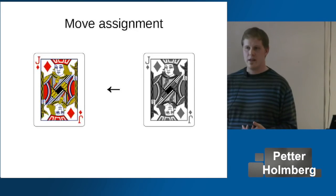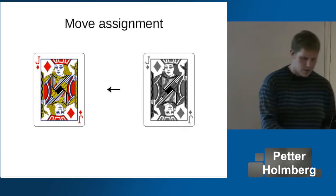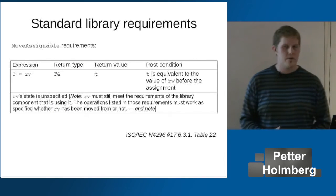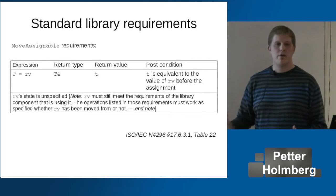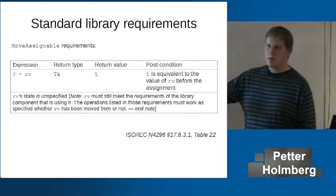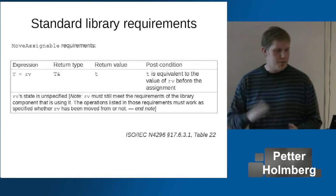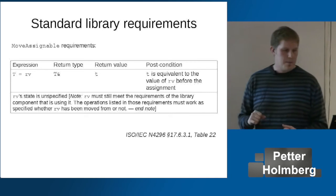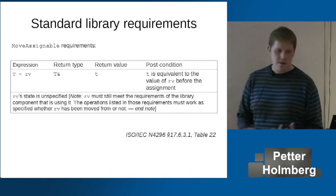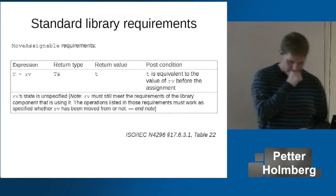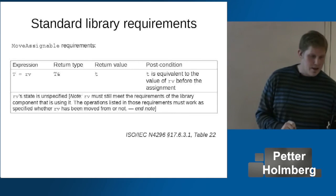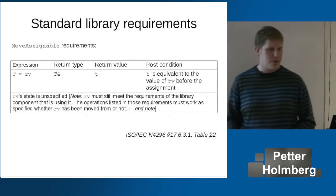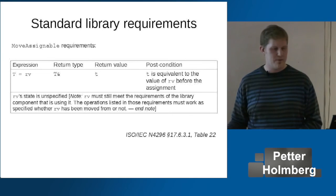So it seems pretty clear that this object should at least be partially formed. But actually that's not quite enough — if you go and read the standard, these concepts are described in the library part of the standard already today, not as concepts but as library requirements. Here's what it says about move assignment: if you do a move assignment, the object on the right side (referred to as `rv`) is in an unspecified state. Except for this interesting note: `rv` must still meet the requirements of the library component that is using it — the operations listed in those requirements must work as specified whether `rv` has been moved from or not.